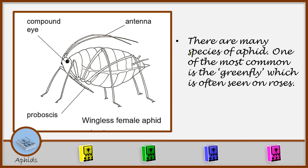There are many species of aphids. One of the most common is the green leaf aphid, also called the greenfly, which is often seen on roses. You can also see it on green vegetables like cabbages, other small vegetables, and on passion fruits and so on.